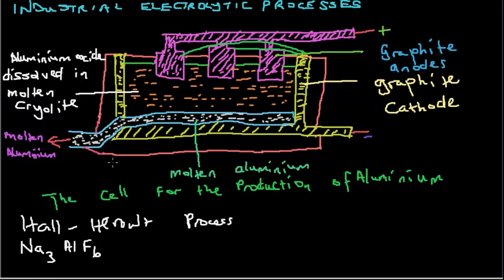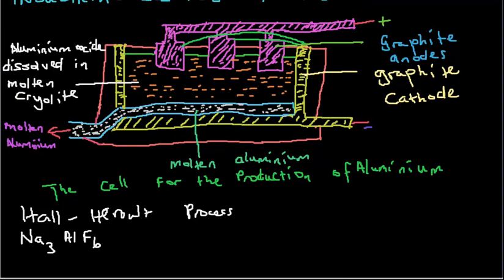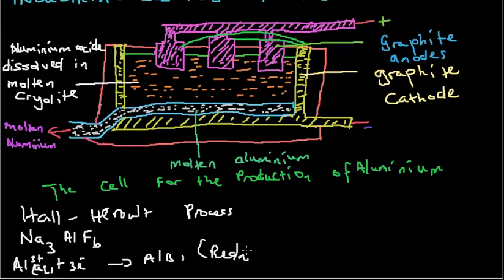At the cathodes, aluminum ions gain electrons. The reaction is Al³⁺ plus 3 electrons forming solid aluminum. The aluminum 3 plus is in aqueous form. This is a reduction reaction taking place at the cathode.